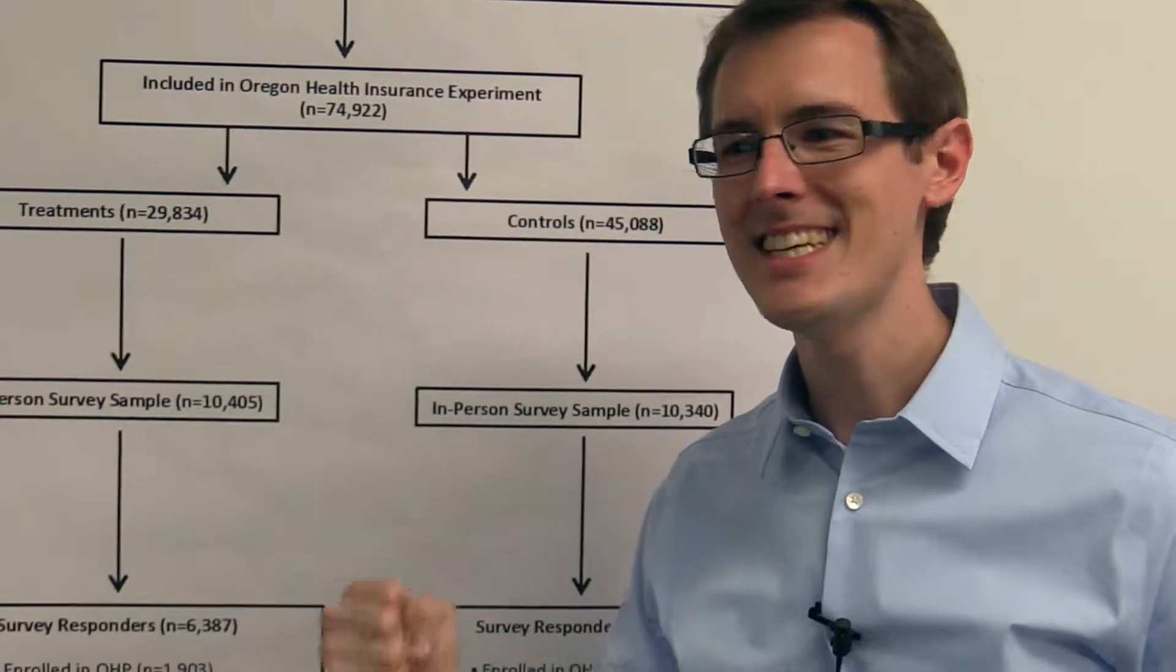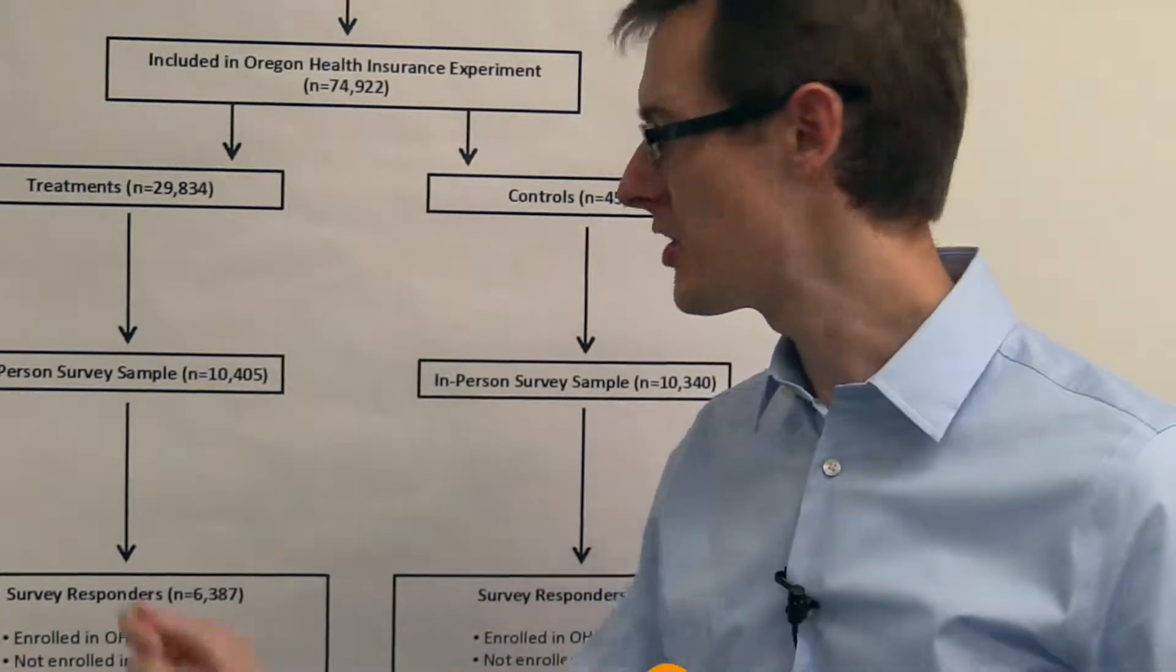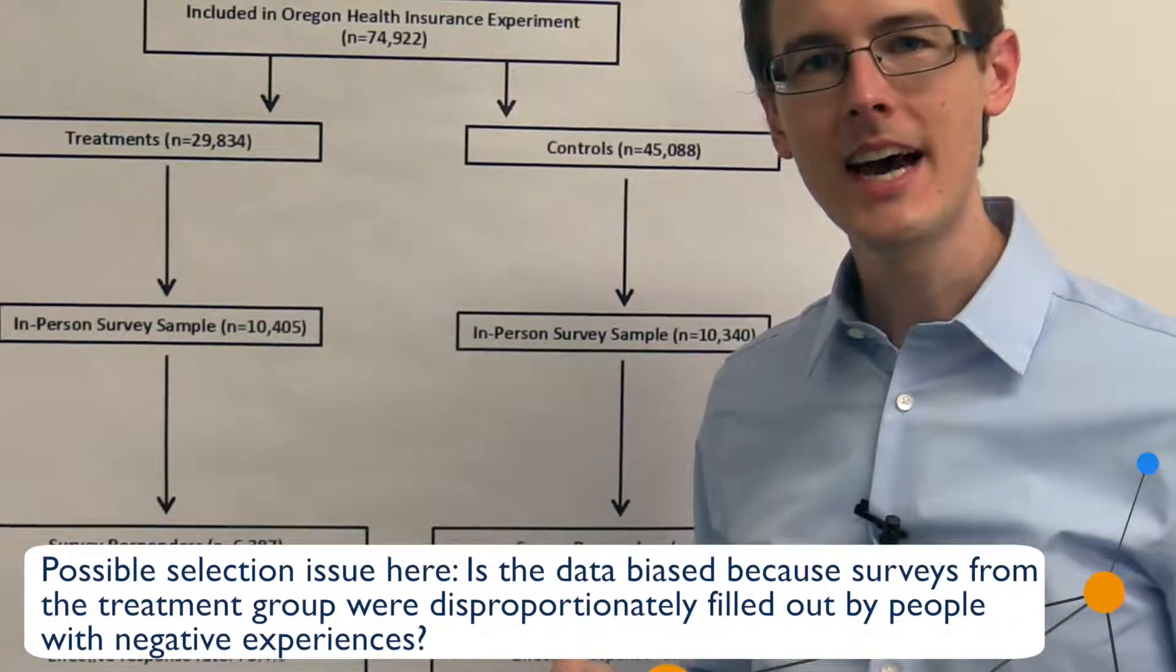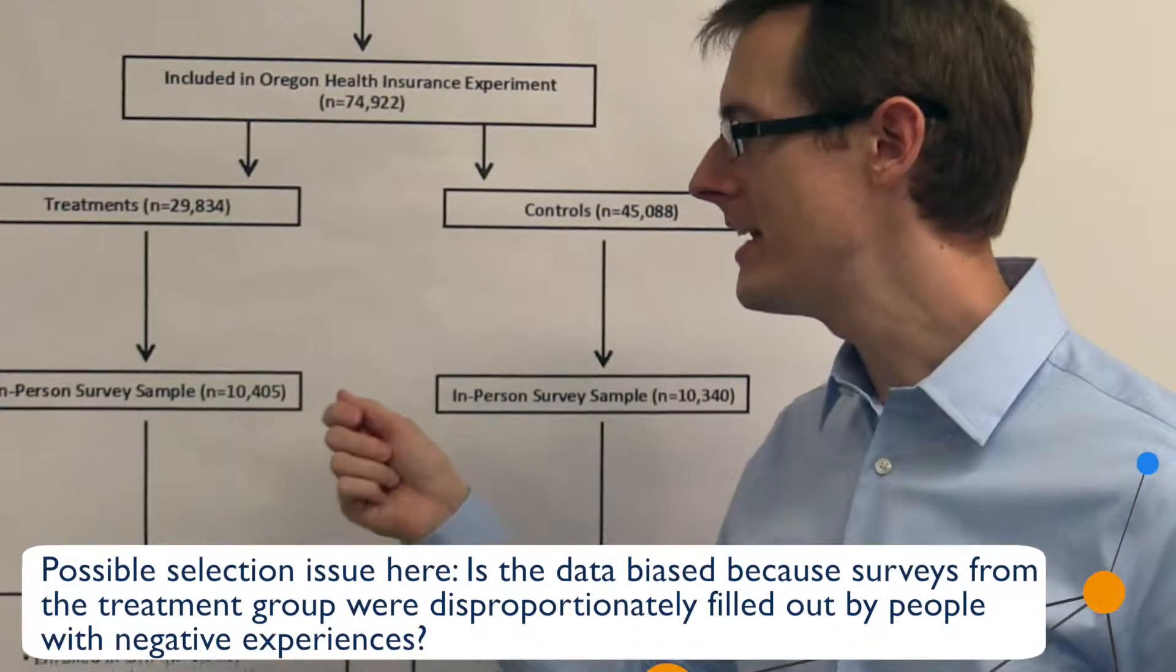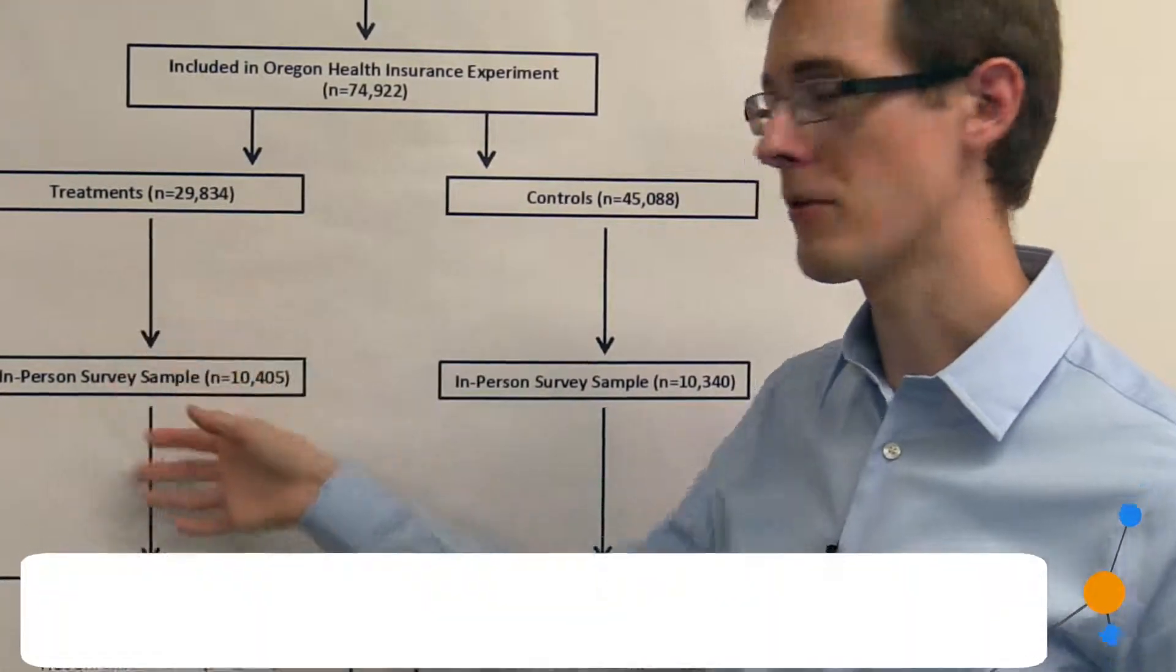And they just see it, and they're like, great, this is the time I can let people know that I am not happy. And so they fill out the survey, and you end up getting data on just the people who have a negative treatment effect of Medicaid over in your treatment group.